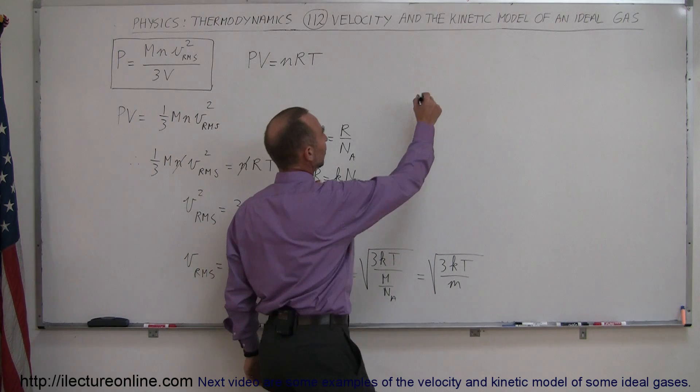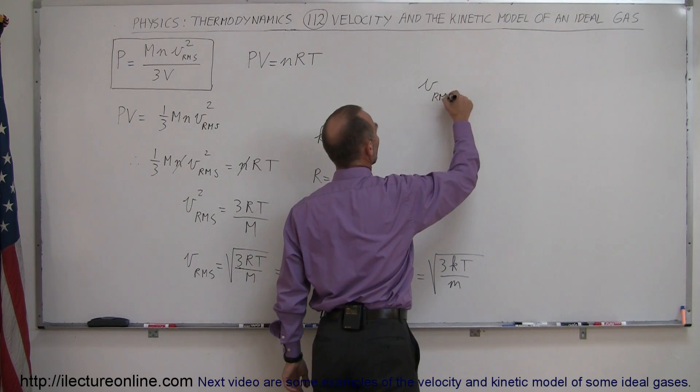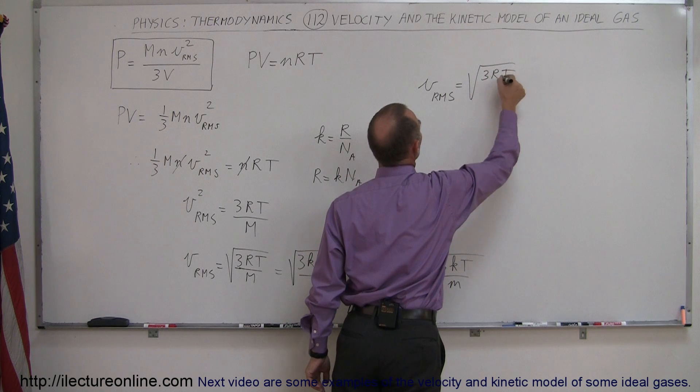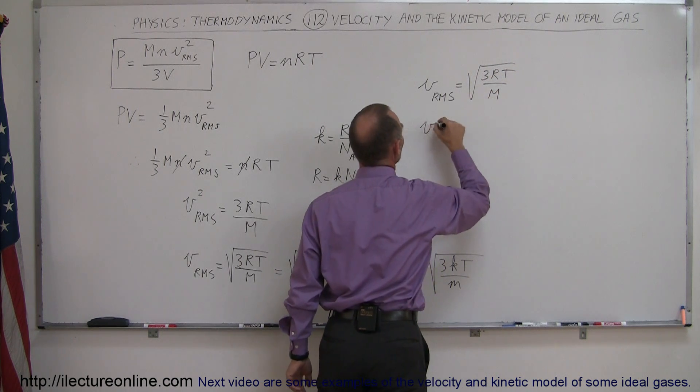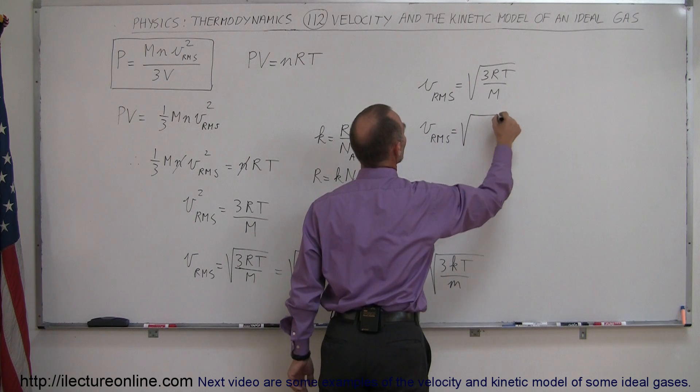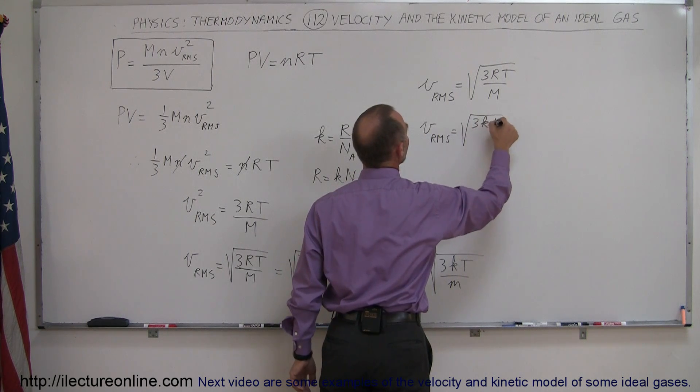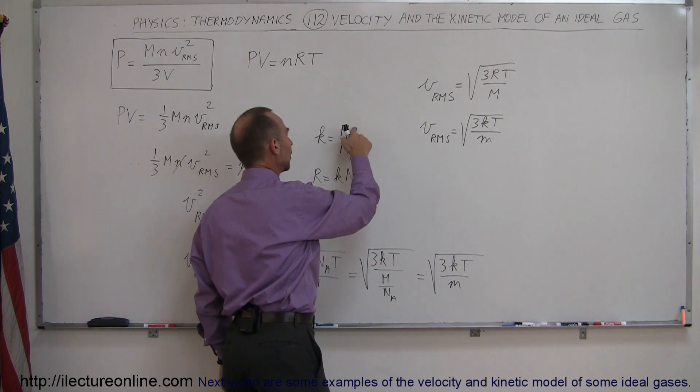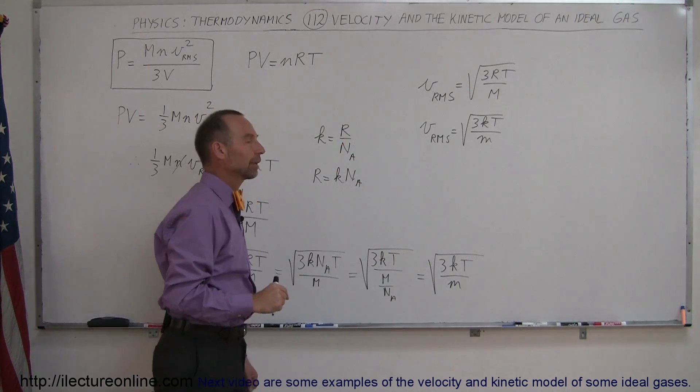So we write VRMS can be written as the square root of 3RT over the molar mass. Or we can say that VRMS is equal to the square root of 3KT over the mass of a single molecule, where K of course is the gas constant divided by Avogadro's number.